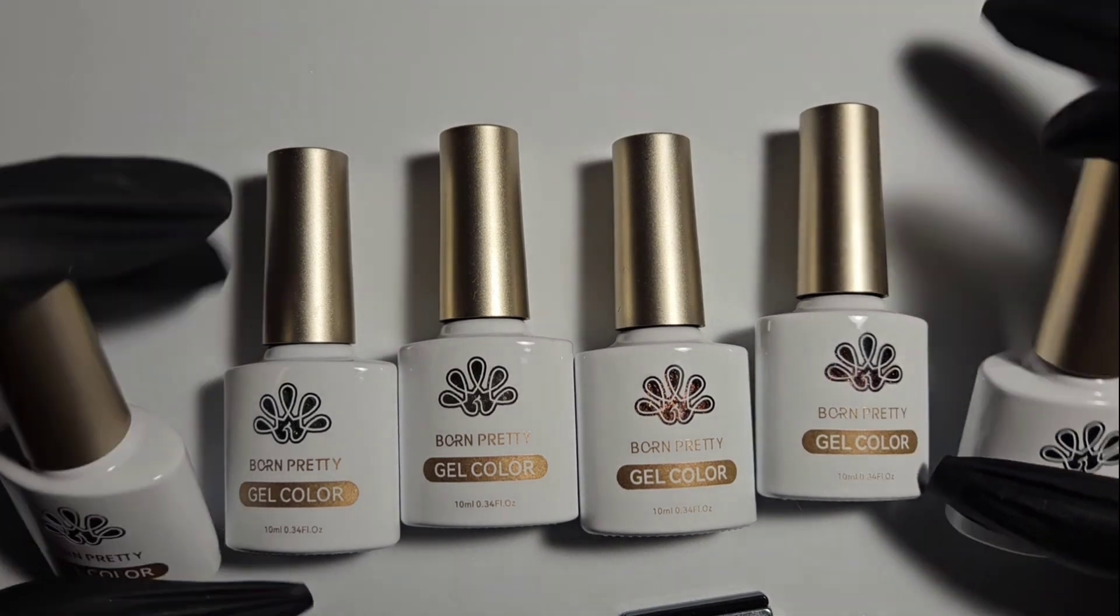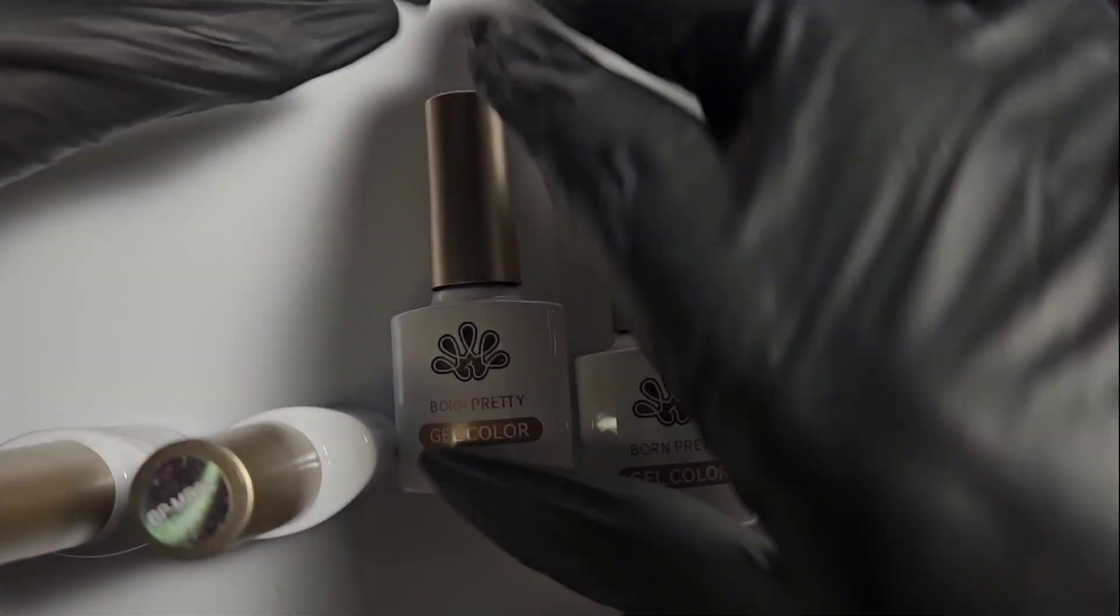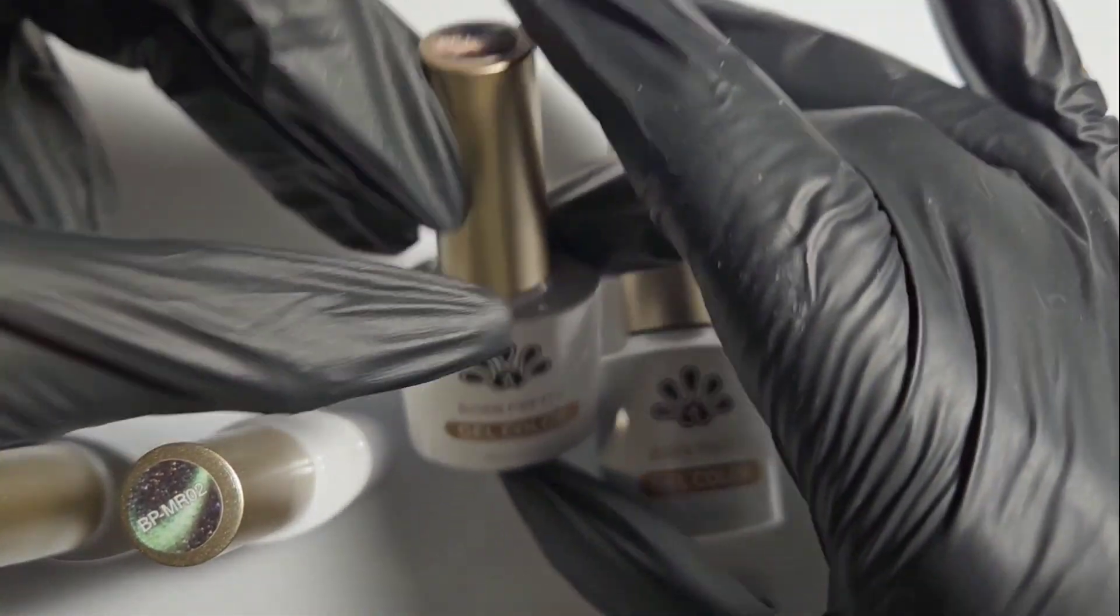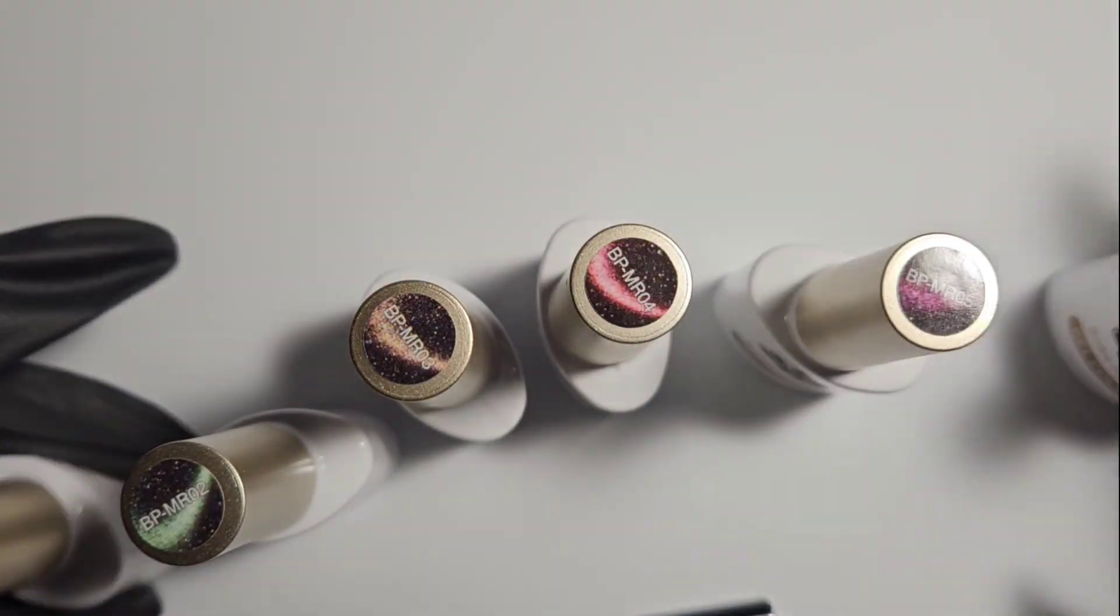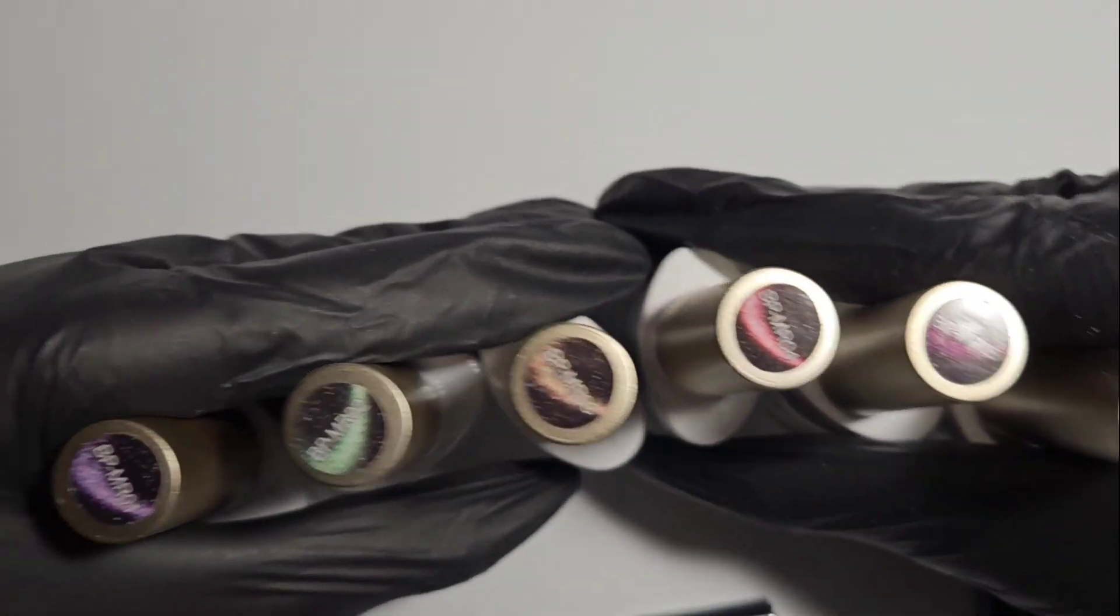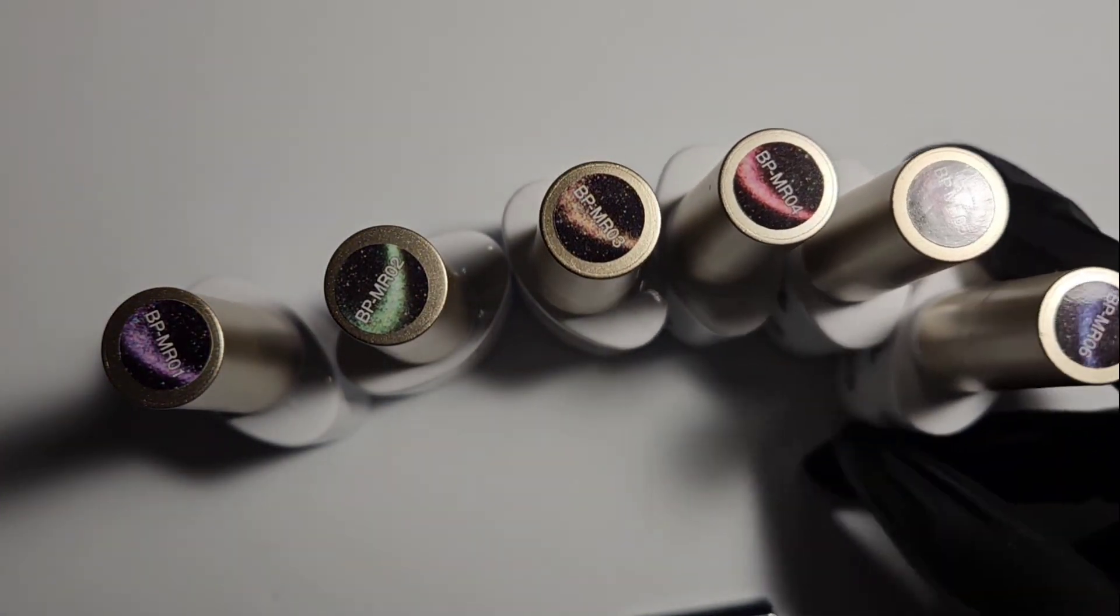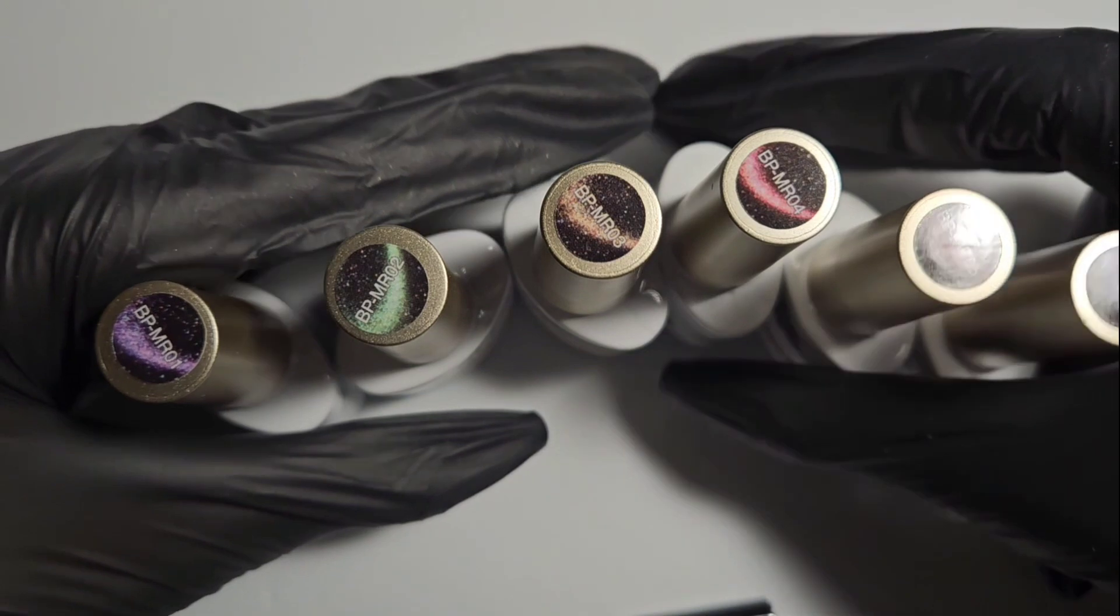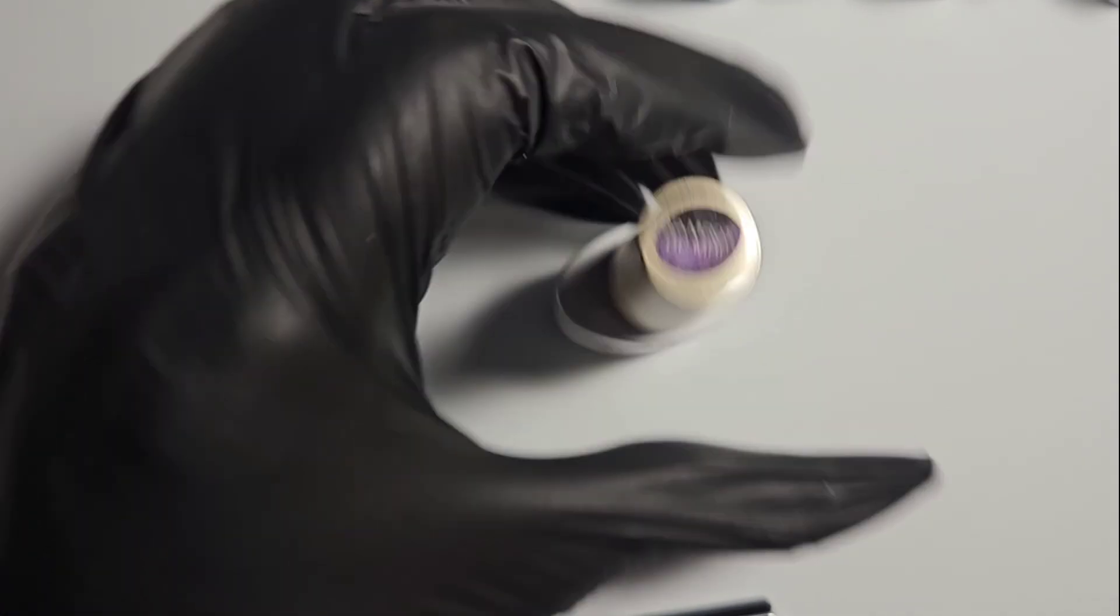They are BP numbers BP MR01 through BP MR06. And they kind of look like that. So we'll go in number order with our swatching. We'll start with BP MR01 which looks like a purple.